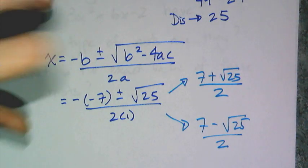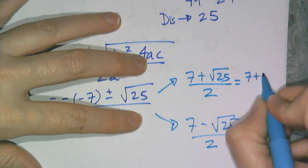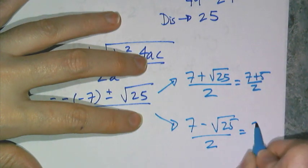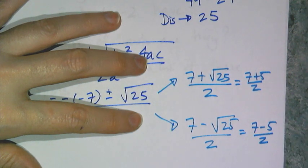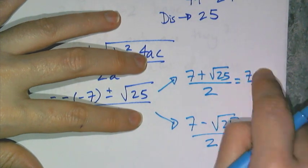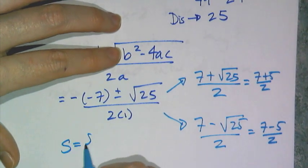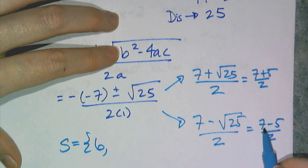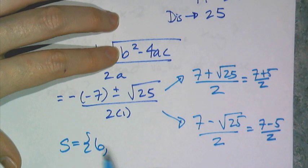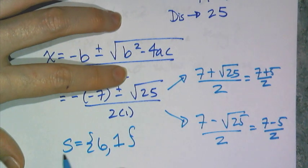So I get 7 plus 5 over 2, and 7 minus 5 over 2. And 7 plus 5 is 12 divided by 2, gives me one solution of 6. And 7 minus 5 is 2 divided by 2, gives me another solution of 1.